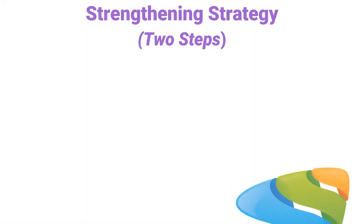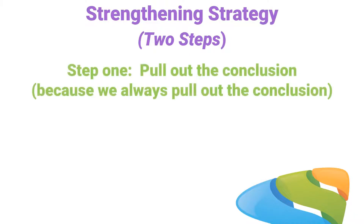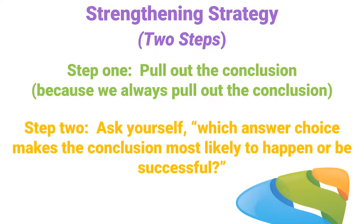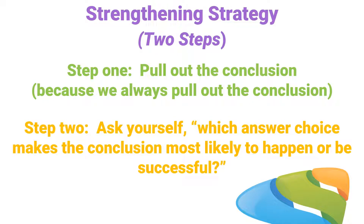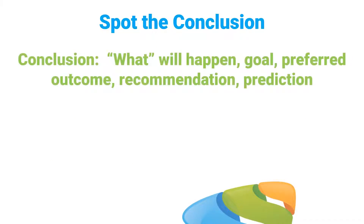The secret for nailing strengthening questions is really pretty simple. First, pull out the conclusion — because we always pull out the conclusion — and then ask yourself which answer choice makes the conclusion most likely to happen. We're looking for reasons why the conclusion will be successful. The conclusion is what you want to have happen: it's the goal, the prediction, or the preferred outcome.